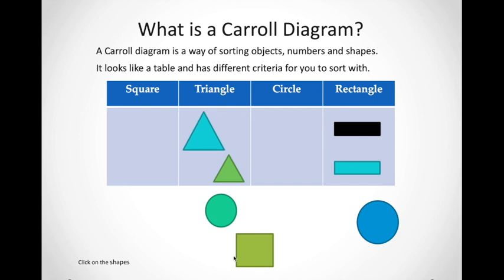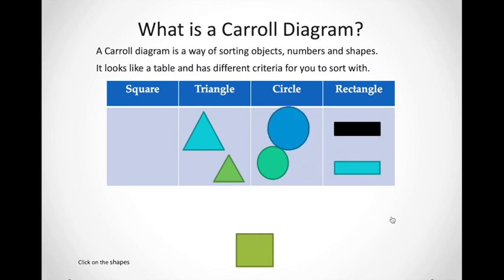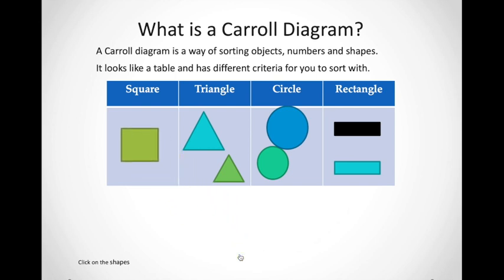Now that we've sorted all the triangles, let's look at what shape is this. Is it a square or is it a circle? If you've guessed circle, super job! Can you find any other circle here? Yes, here it is. And can you find a square? Here we go. Excellent. So now we've sorted all the shapes into a table.